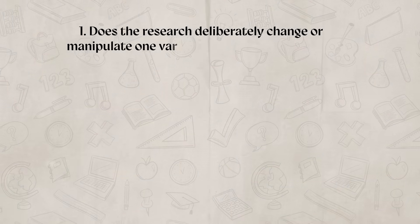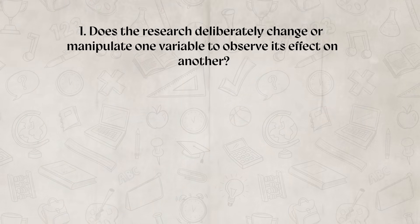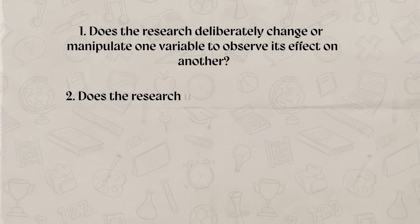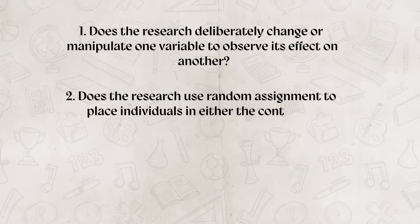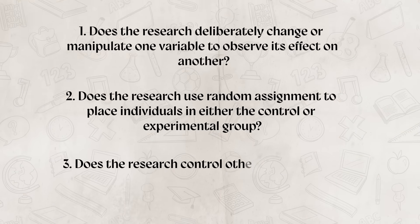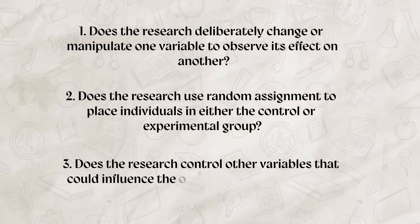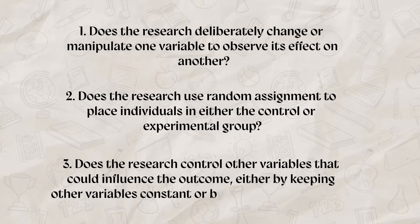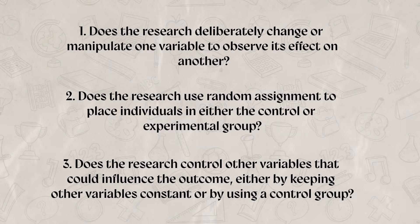To help you on the AAQ, you really only need to answer three questions to determine if a study qualifies as an experiment. First: does the research deliberately change or manipulate one variable to observe its effect on another? Second: does the research use random assignment to place individuals in either the control or experimental group? Third: does the research control other variables that could influence the outcome, either by keeping other variables constant or by using a control group? If any of these questions is no, the study is most likely a non-experimental design.